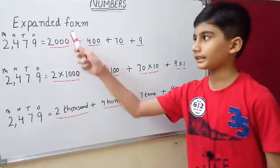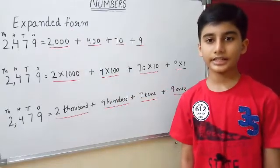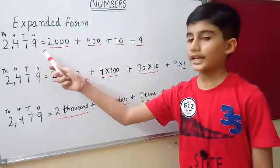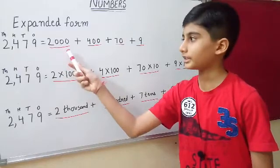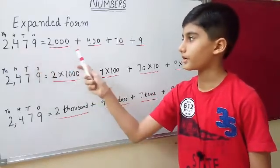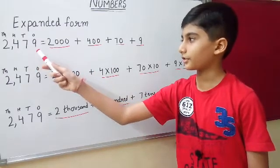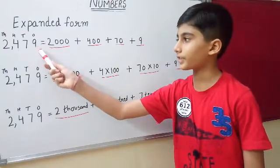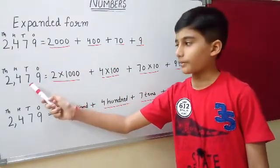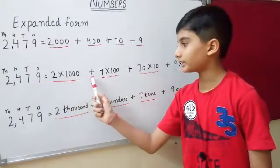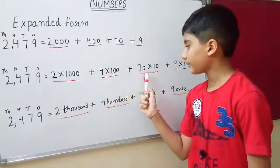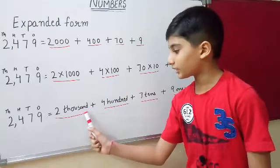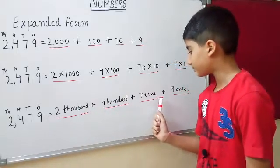Another way to write a number is expanded form. Expanded form means a number written as an addition statement. We can write expanded form in three different ways. For example, the number 2,4479: first write the place value of each digit — two thousands, four hundreds, seventy, nine. Another way: 2 × 1000 + 4 × 100 + 7 × 10 + 9 × 1. A third way: two thousand + four hundred + seven tens + nine ones.